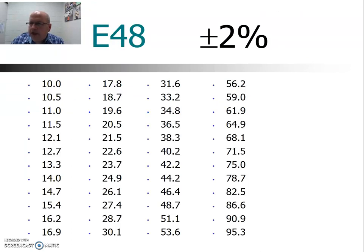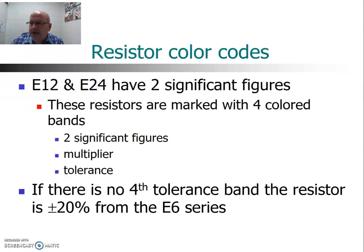More frequently you'll see higher precision resistors. We have E48, which is plus or minus 2%. What's interesting to note is that in the E48 series, we move up to three significant figures when specifying the value. So E48 uses three significant figures, and that plays a role when we talk about color codes for resistors.